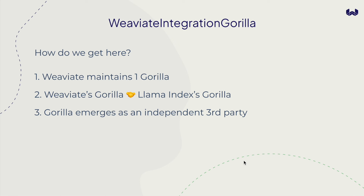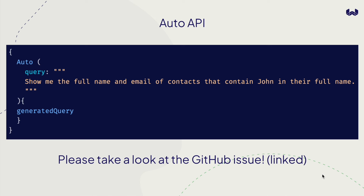Thank you so much for watching this presentation of the Weaviate GraphQL Gorilla. The most immediate thing in front of us is interfacing this Weaviate GraphQL Gorilla to Weaviate users as well as LLMs through the auto API. Please check out the GitHub issue and let us know what you think — thumbs up if this would be useful to you, or if you see any holes in the design. To conclude: by exposing LLMs to these APIs, we're going to see a really interesting evolution of LLMs and search databases.